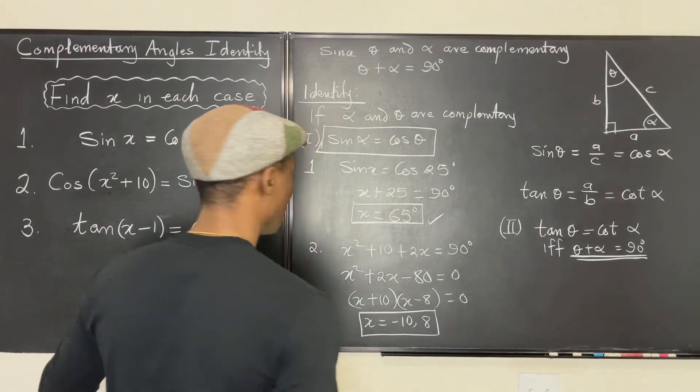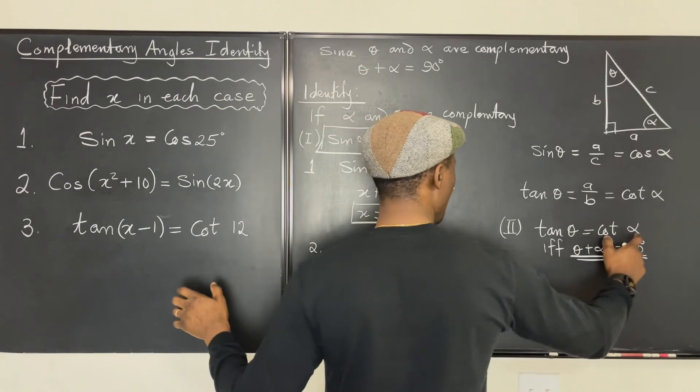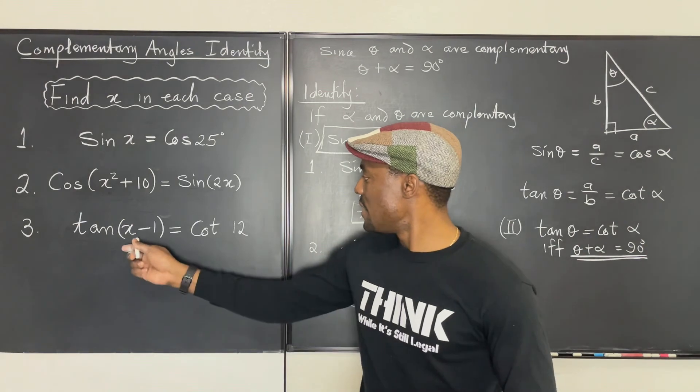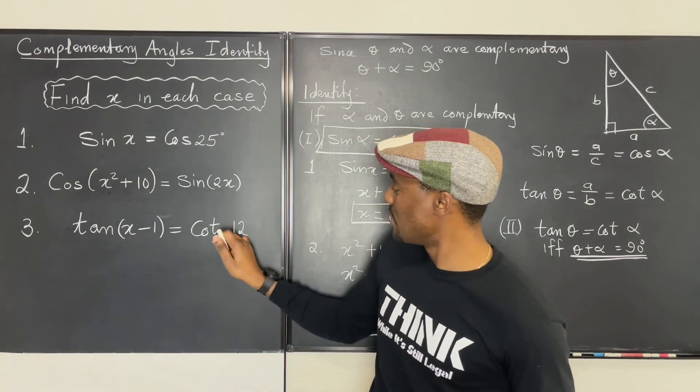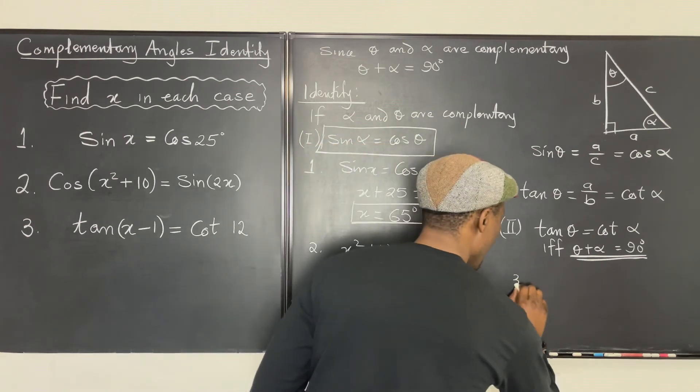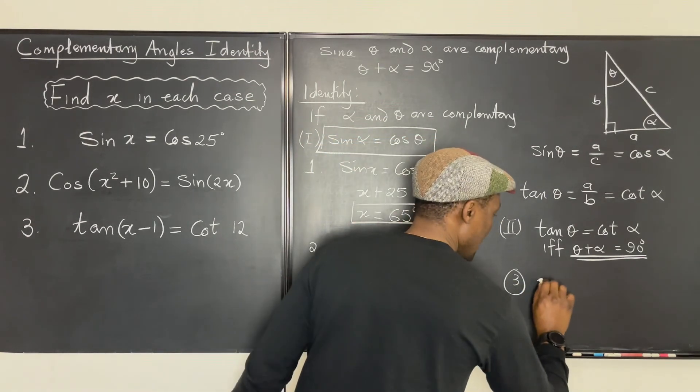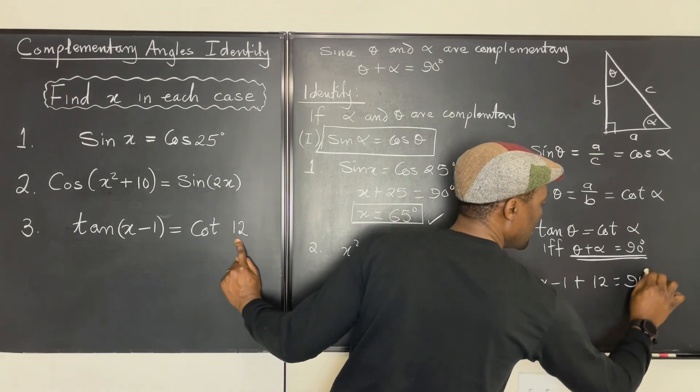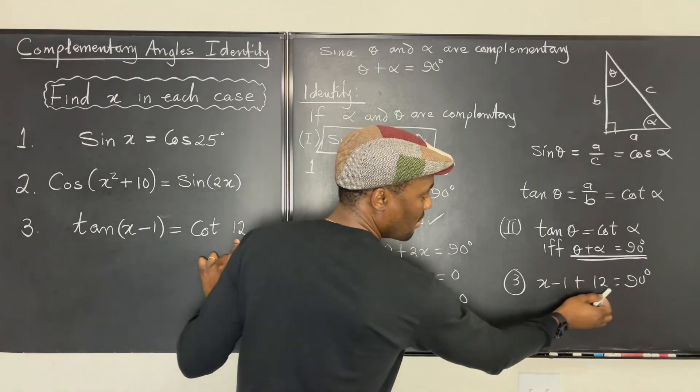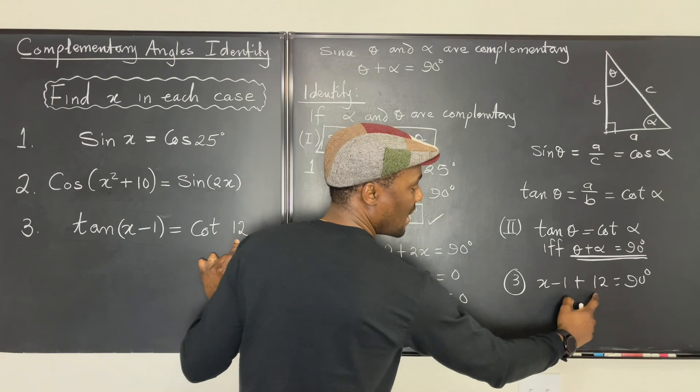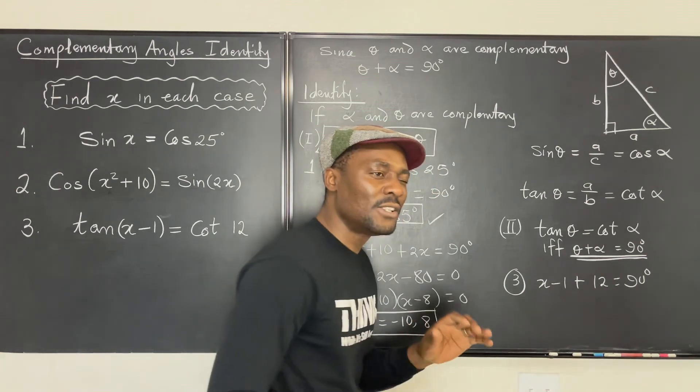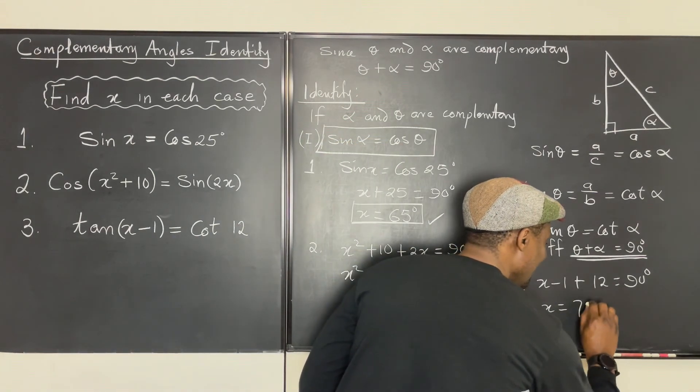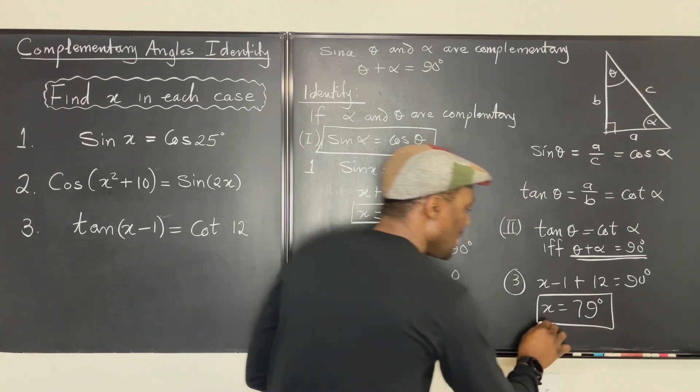Now, let's solve number three. So for number three, we said that tangent and cotangent will only be equal when these two are complements of each other. So I'm going to add this to this and equate it to 90 degrees. So for question three, I'm going to say that x minus 1 plus 12 will be 90 degrees. And I know that minus 1 plus 12 is 11. So x plus 11 is 90. What would I add to 11 to get 90? That must be 79. So x equals 79 degrees. And that's the answer to the third one.